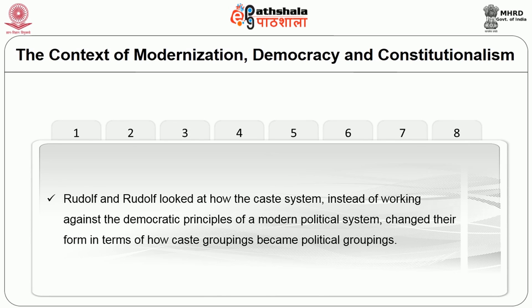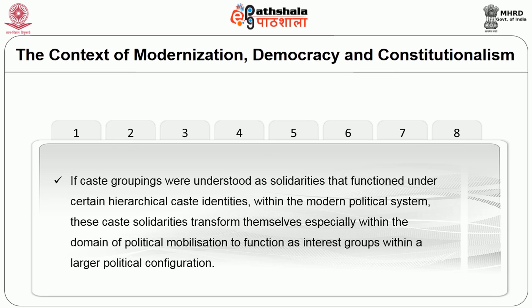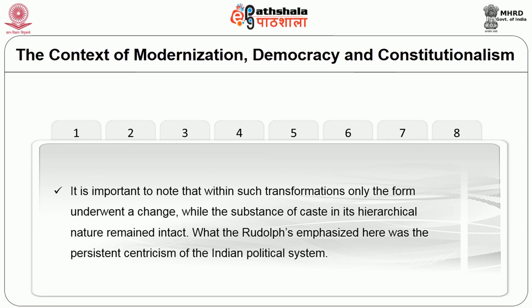Rudolf and Rudolf looked at how the caste system, instead of working against the democratic principles of a modern political system, changed its form in terms of how caste groupings became political groupings. If caste groupings were understood as solidarities that functioned under certain hierarchical identities, within the modern political system these caste solidarities transformed themselves especially within the domain of political mobilization to function as interest groups within a larger political configuration. It is important to note that within such transformations only the form underwent a change while the substance of caste in its hierarchical nature remained intact. What Rudolf emphasized here was the persistent centricism of the Indian political system.